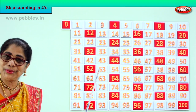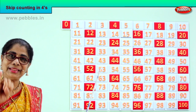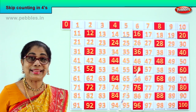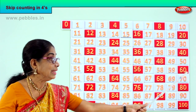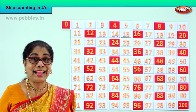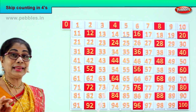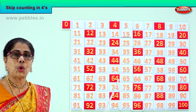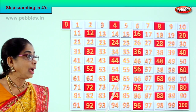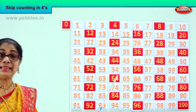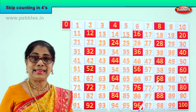After 52: 53, 54, 55, 56. After 56: 57, 58, 59, 60. After 60: 61, 62, 63, 64. After 64: 65, 66, 67, 68.